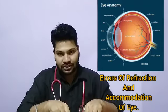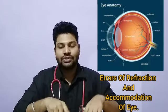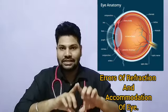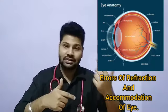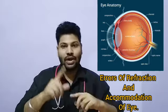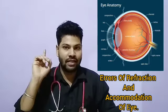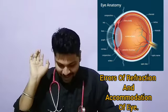Presbyopia occurs in older age — 40 plus — and is due to loss of functioning of the ciliary muscles and ciliary body. To understand what the ciliary body is, you should go and read the anatomy part.